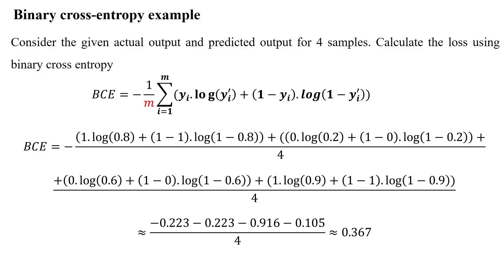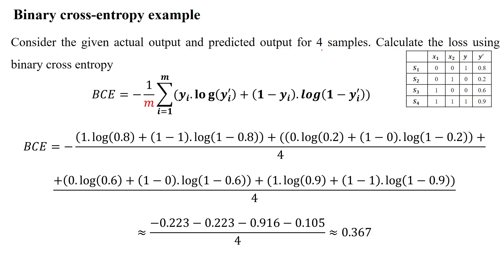Hi everyone. Here we will discuss an example of binary class classification. The dataset has four samples with actual output values of either positive class or negative class for each sample, and the predicted values are given randomly here. I did not calculate these using any activation function — I used these values randomly for this calculation.